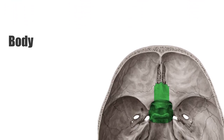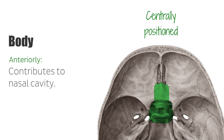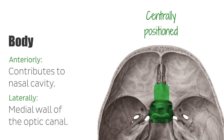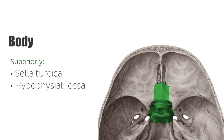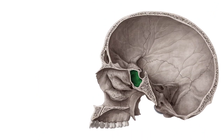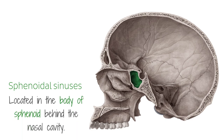The body is the most centrally positioned portion. Anteriorly, it contributes to the nasal cavity. Laterally, it builds the medial wall of the optic canal. Superiorly, the body forms the sella turcica, the hypophysial fossa, and the dorsum sellae. They contain the anterior and posterior clinoid processes respectively. The clivus slopes posterior to the body.